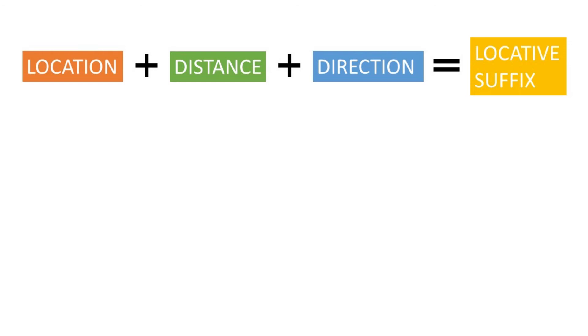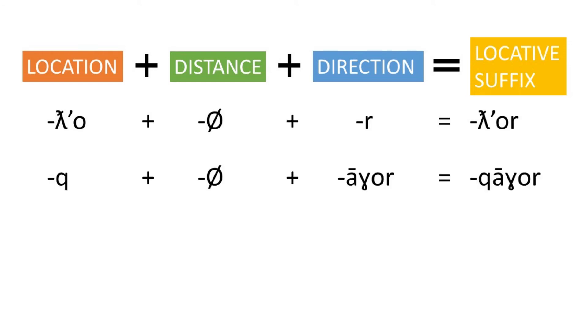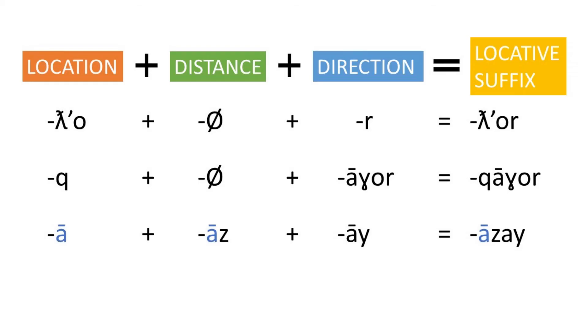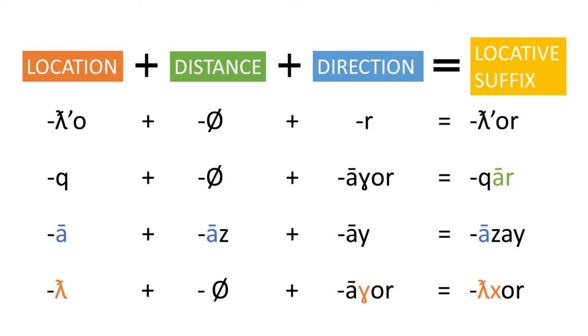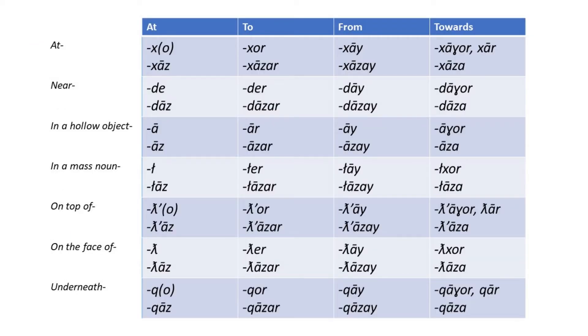Pick a location, then a distance, then a direction, then add them all together. To the top of something, add tl-or. Towards the face of something, add qa-hor. From the inside of a hollow object that's far away, add a-zai. Sometimes when things are added together, they end up sounding a little bit different - whenever two vowels come next to each other, one overlaps the other. You would expect 'towards the bottom of something' to be tl-or, but it's actually tl-or, and after certain locations, a-hor can optionally just be shortened to ar. So spread out like this, it doesn't really seem like 56 totally separate locative cases - they are a tiny bit fusional, not exactly just sticking things together, but pretty much.